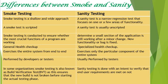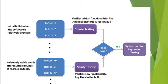Sanity testing is mainly done to verify whether end-user requirements are met or not. Looking at the flowchart, we can see the difference very clearly. Smoke testing starts during the initial builds, when the software is relatively unstable. It checks only critical functionalities — like whether the application starts successfully — which are very basic functionality tests, to ensure that further testing can be performed.